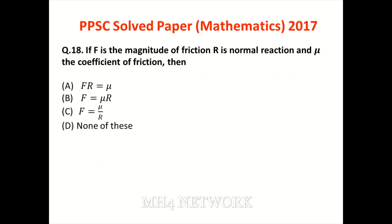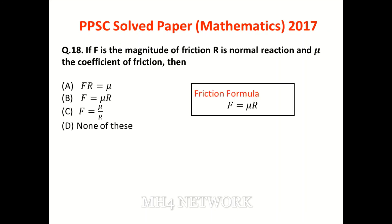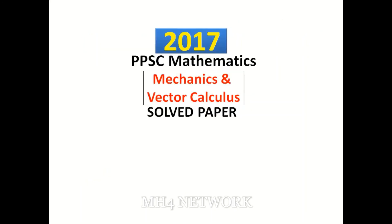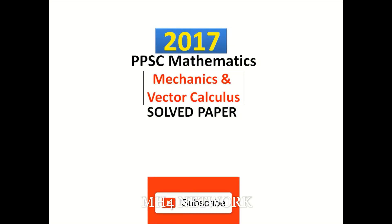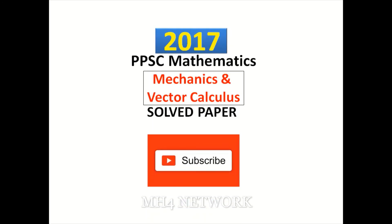If F is the magnitude of friction, R is the normal reaction, and mu is the coefficient of friction — friction formula: F = μR. Option B is the correct answer. Yeh the saare Mechanics aur Vector Calculus ke sawaal jo 2017 mein aaye the — sab solve kar liye. Channel subscribe karein aur aap sab ka shukriya.